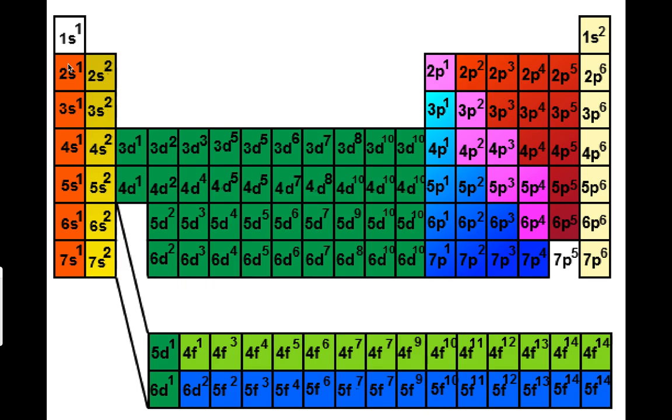So if you were going to do boron, you would have to say 1s2, 2s2, 2p1. And so then you'd have 2, 4, 5 electrons.